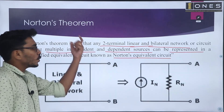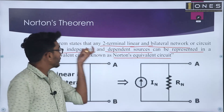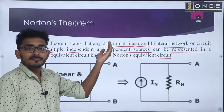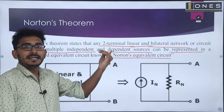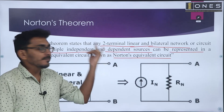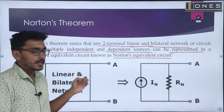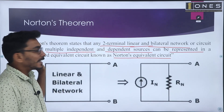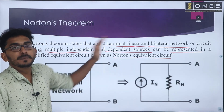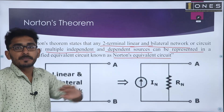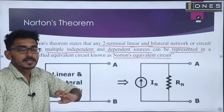The Norton's theorem states that for a two-terminal, linear, active, bilateral network or circuit containing independent to dependent sources — that is, a number of independent to dependent sources.